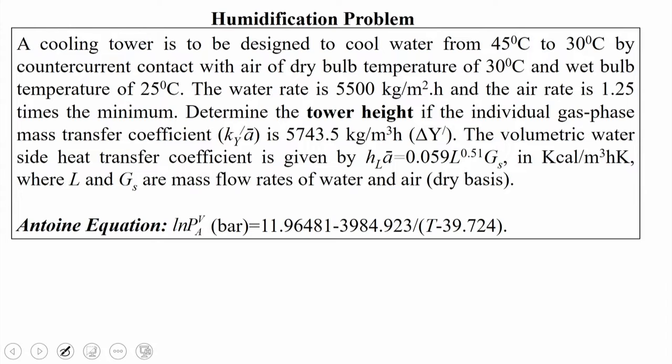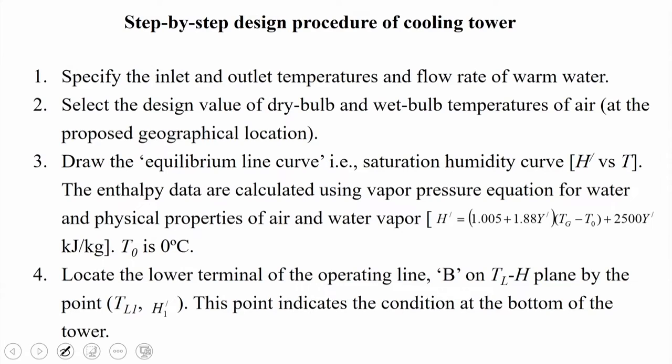Before starting the solution, we will recapitulate the step-by-step procedure of cooling tower design. The steps are: firstly, specify the inlet and outlet temperature and flow rate of warm water — in our case this is given. Then, select the design value of dry bulb and wet bulb temperature of air at the proposed geographical location — these are also supplied in this problem.